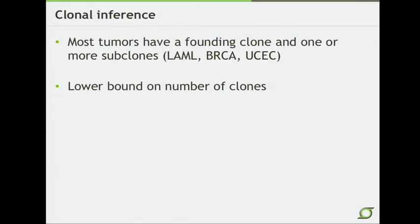We've applied this across a large sample set of tumors, looking mostly at AML, breast cancer, and endometrial cancer, and we can say that most tumors in those datasets have at least one founding clone and one or more subclones. The numbers shown are a lower bound on the number of clones — detection sensitivity is one factor, but more importantly, we're unable to distinguish between two independent clones that both occur at, say, 20 percent variant allele frequency without single-cell methods.